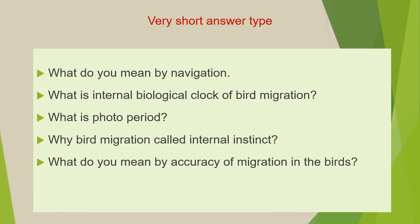Next is: what do you mean by navigation? Next is: what is the internal biological clock of bird migration? Next is: what is photoperiod? Next is: why is bird migration called an internal instinct? And the last question of this category is: what do you mean by accuracy of migration?